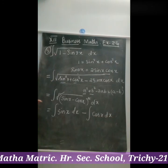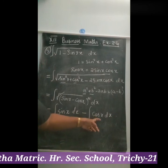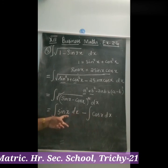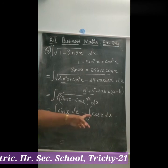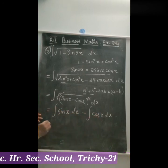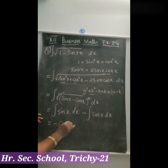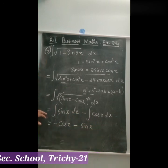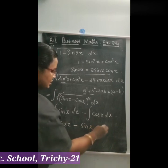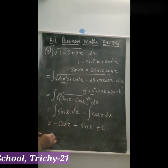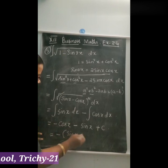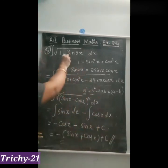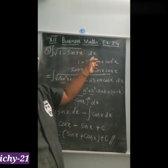The integration of sin x is minus cos x, and the integration of cos x is sin x. So the result is minus cos x minus sin x plus c. This is the answer for integration of root of (1 minus sin 2x) dx.